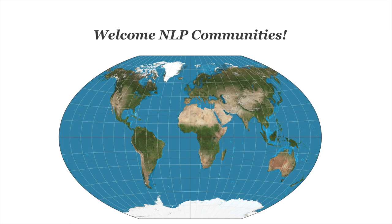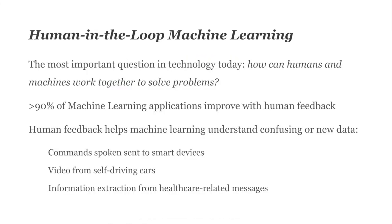This talk is an excerpt from my book Human-in-the-Loop Machine Learning, and it's answering what I think is one of the most important questions in technology today: how can humans and machines work together to solve problems? About 90% of machine learning applications improve with human feedback — typically supervised learning — and human feedback helps machines understand confusing or new data, whether it's commands to smart devices, videos from autonomous vehicles, or information extraction from healthcare messages.